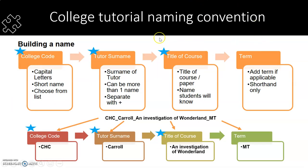College and tutorial lists have a slightly different naming convention. There is the college code, the tutor surname, and the title of the course. Again, these are separated by underscores. So for this tutor list from Christchurch College we would have: CHC_carol_an investigation of wonderland_MT — and that is the name of a tutor list.